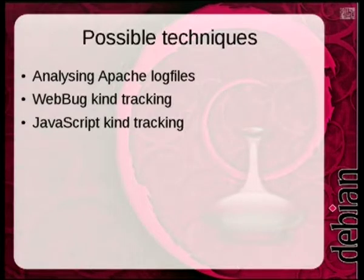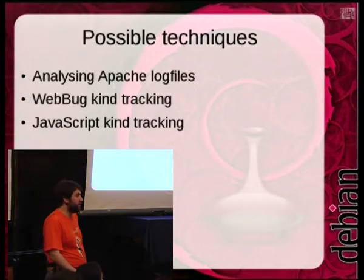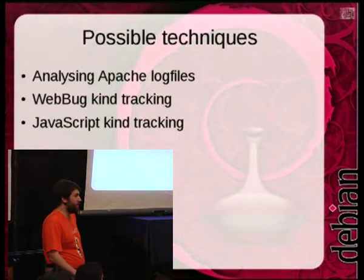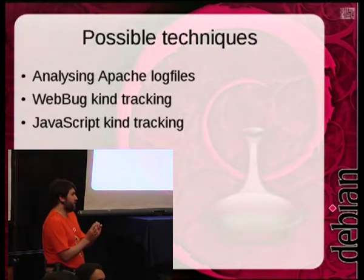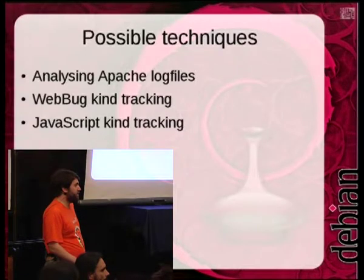What we could do — the obvious things — is start analyzing the Apache log files. Nowadays all the web mirrors are on Debian.org or DSA-maintained hardware, so we can easily get the Apache logs. Other techniques include having a one-by-one pixel via a CGI script to gather information about user agents. Most of that can also be done using JavaScript, like some sort of Ajax request, which would also give us information about screen size and other things.